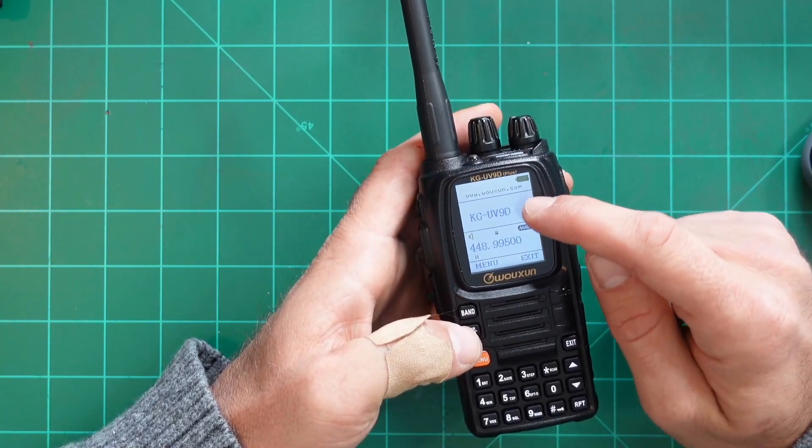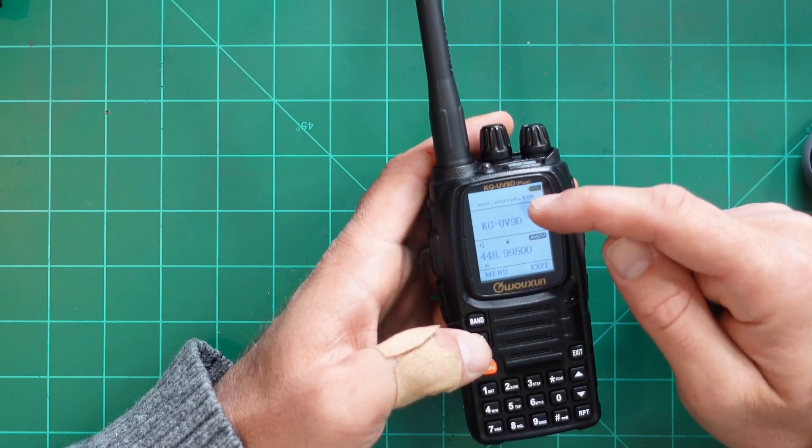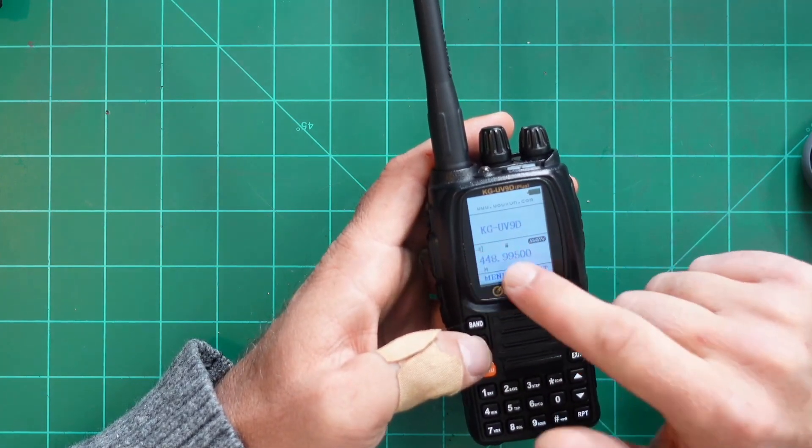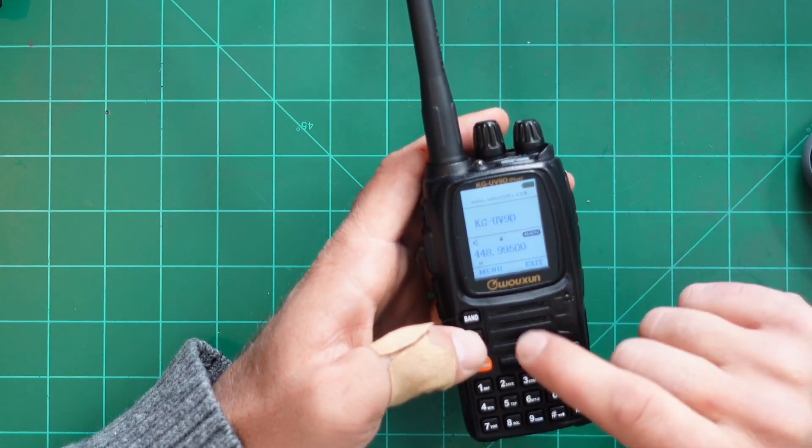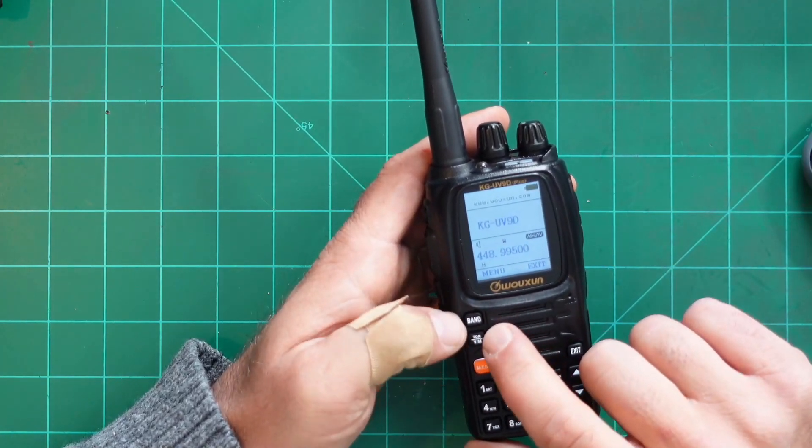You can see right now that I have KG UV90 on my, we'll call the A band. This is A band. This is B band. That means right now I'm actually only listening to one frequency and that frequency is in the B band.